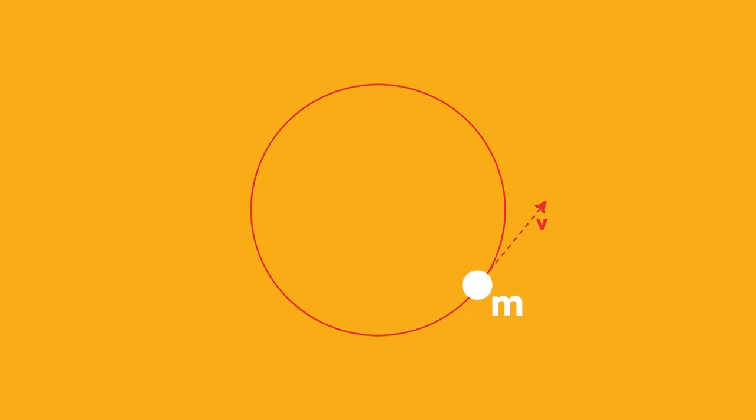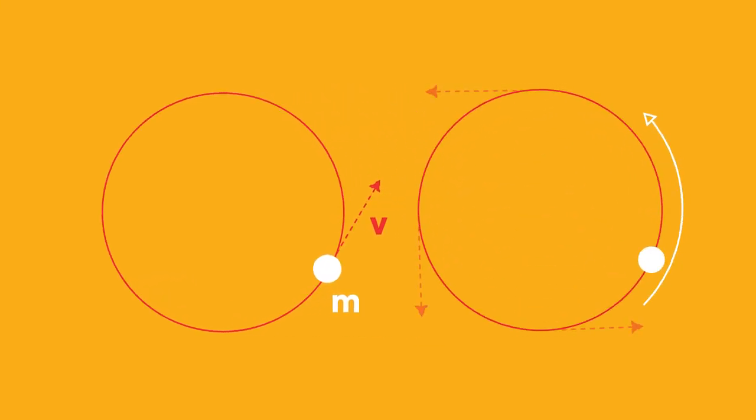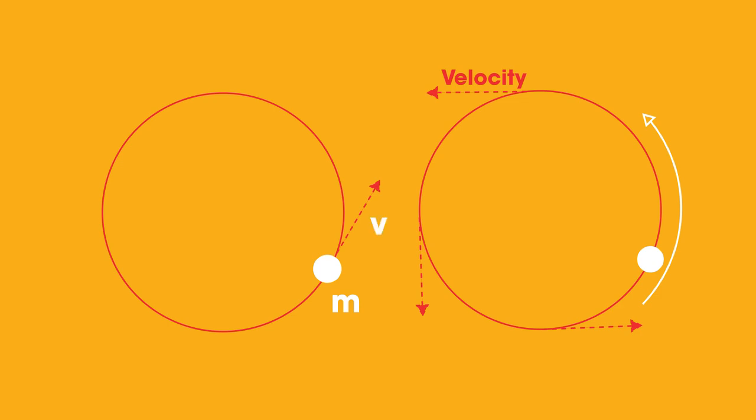When an object is moving in a circle at a constant speed, it has a certain velocity v which is at a tangent to the circle. At the same time, the mass is also accelerating towards the center of the circle.